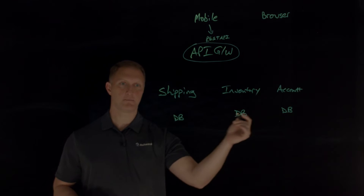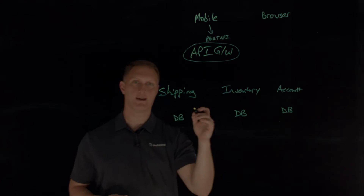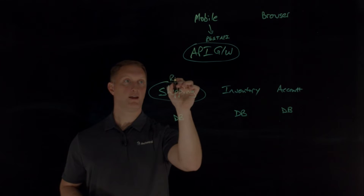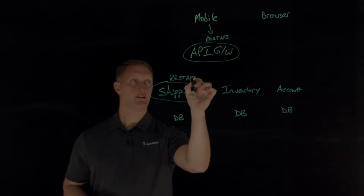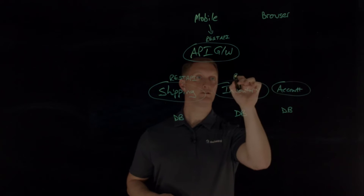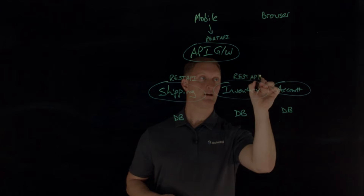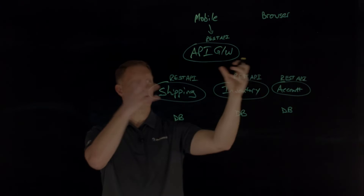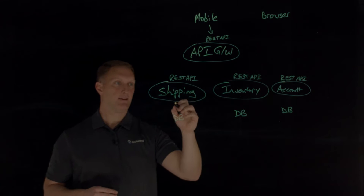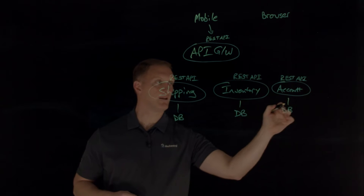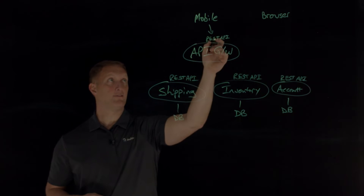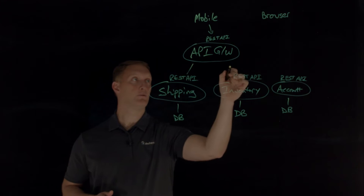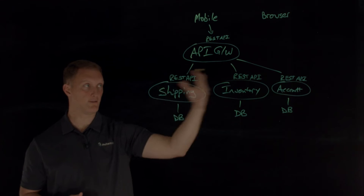The shipping service, inventory service, and account service each have a REST API, and this is how they all talk to each other via these REST APIs. They all have their specific APIs exposed and interact with their back-end databases as well. From the mobile traffic, you have a REST API exposed from the API gateway, and the API gateway connects to each of these APIs so that all the traffic can talk.